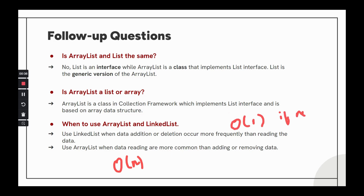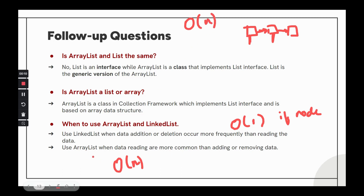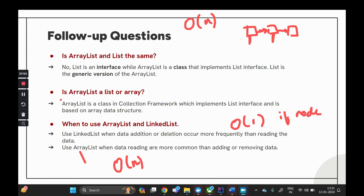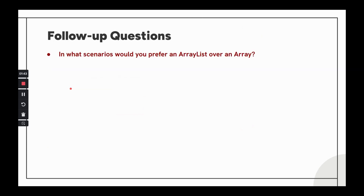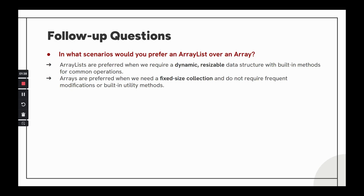In LinkedList, if you know which node to reference, insertion or deletion is constant time — just change the pointers. But if you have to traverse to find the node, it's again O(n). Where to prefer ArrayList over array: use ArrayList when you need a dynamic resizable data structure. Use array when you need a fixed-size collection that doesn't require frequent modification but needs fast random access, as arrays have less memory overhead and better performance.